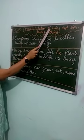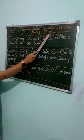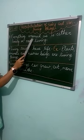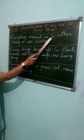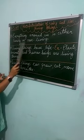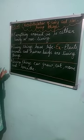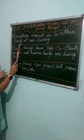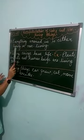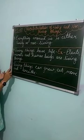Now, recapitulation of living and non-living things. Point number one: everything around us is either living or non-living. I have told you earlier also — everything around us, हमारे आस-पास जो भी चीज़ें हैं वो या तो living हैं या फिर non-living हैं. It is either living or non-living.